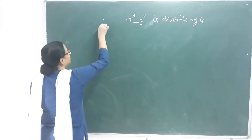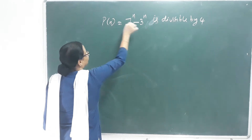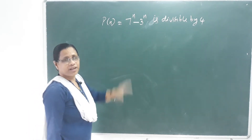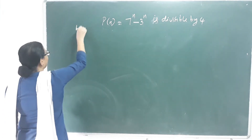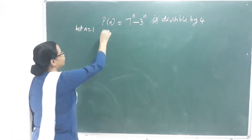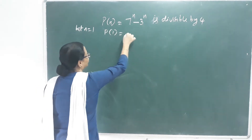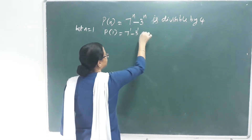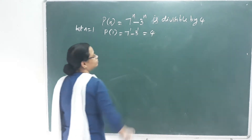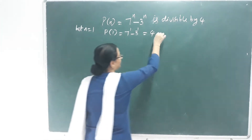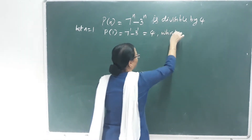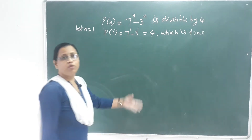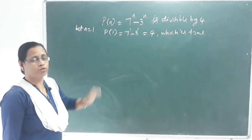First, we name the statement P of N. Second step: let n equal to 1. P of 1 is equal to 7 raised to 1 minus 3 raised to 1, which equals 4. Therefore P of 1 is true.